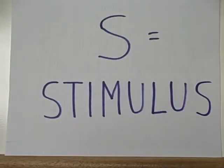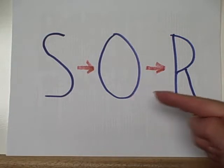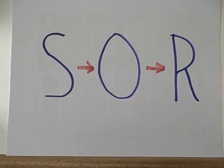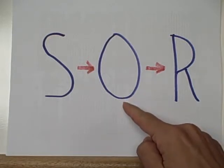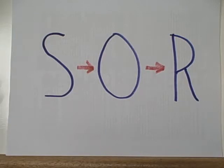There is a stimulus, which is a change in the energy of the organism's environment that the organism can perceive. This is the basic formula for behavior that we study in psychology. A stimulus is presented to an organism and that elicits a response, or sometimes the organism simply acts on its own when it's very active and emits a response.